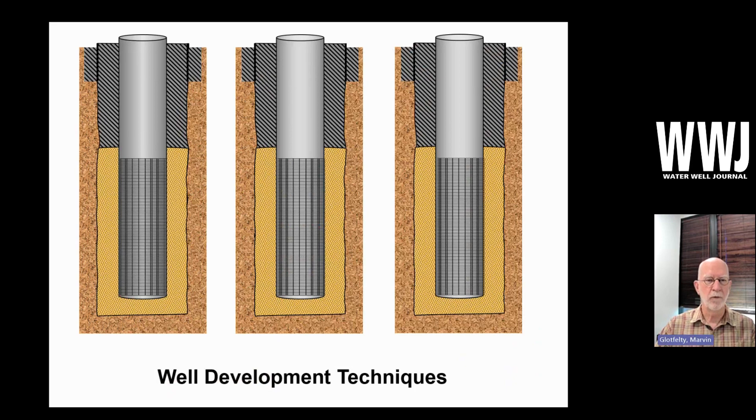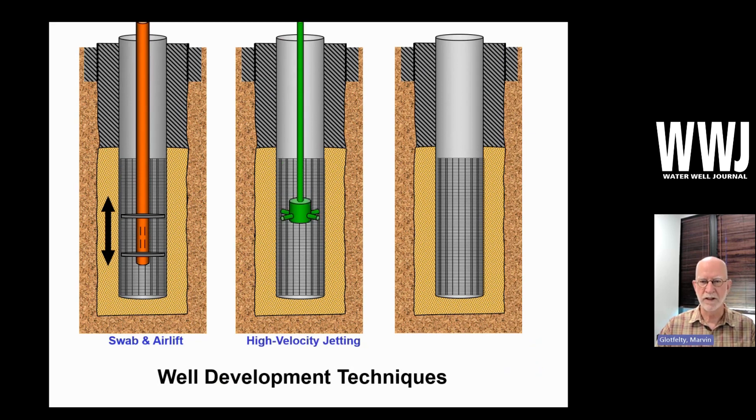So a number of ways to do this. Three common ones are swabbing, reciprocating rubbers up and down the well, simultaneously air lifting, high velocity jetting to break down and remove the wall cake.